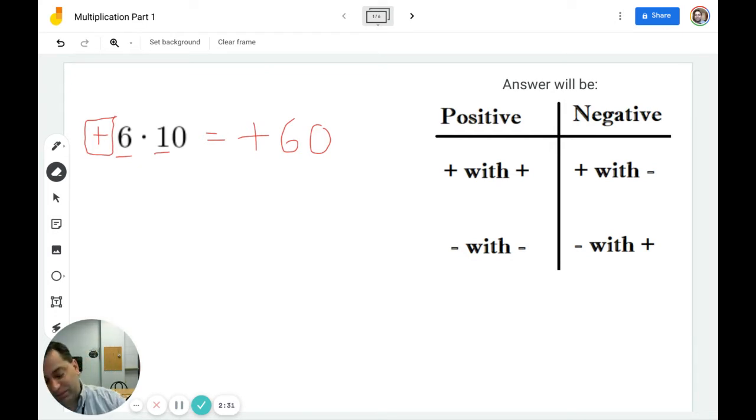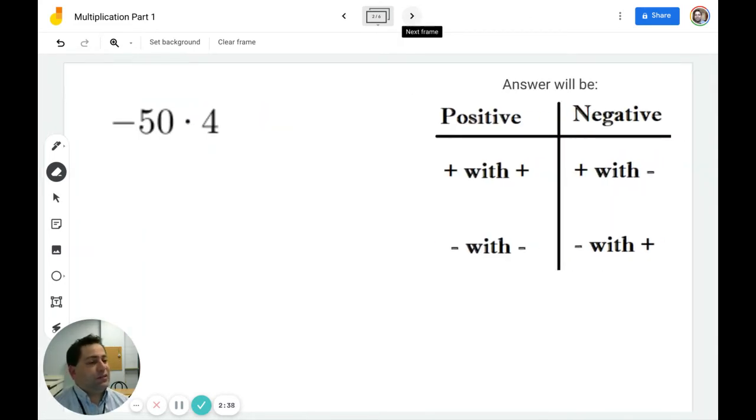Let's try another example. Negative 50 times positive 4. First things first, the sign. So I have a negative times a positive, so I know my answer is going to be negative. Now I focus on the multiplication part. Here I have 4 times 5. 4 times 5 is 20. Then I count up the number of zeros in my problem. There is one 0 in 50. And I can determine that the answer is negative 200.